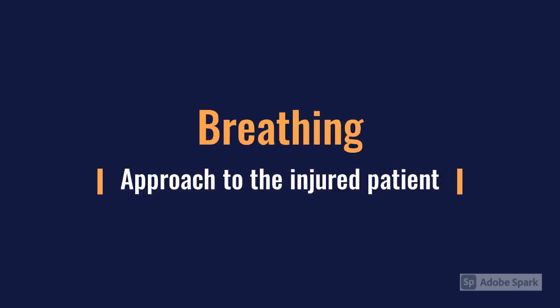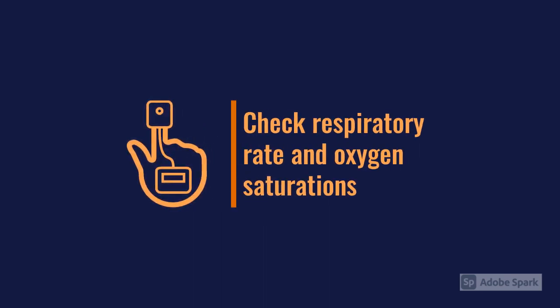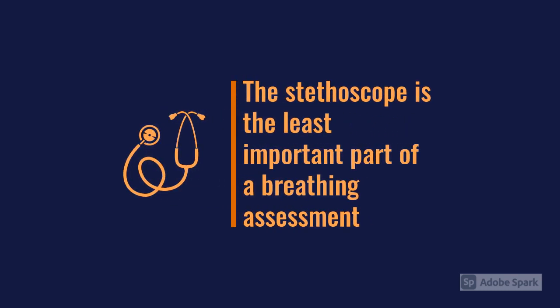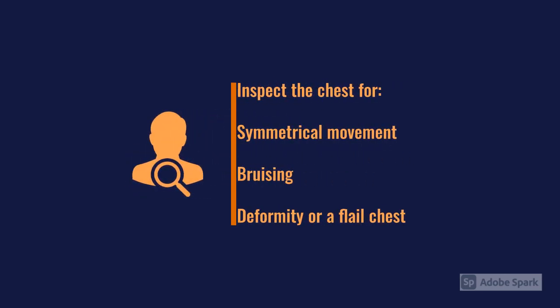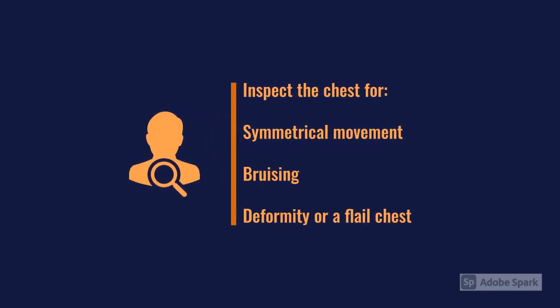Moving on to Breathing — you're going to check respiratory rate and sats, but the key for breathing in a trauma call is actually to largely ignore the stethoscope initially. The stethoscope is in many ways the least important part of a traumatic breathing assessment. The key is to look at the chest, make sure you've got symmetrical movement, and look for any evidence of bruising or a flail chest, where part of the ribs don't move in the same way as the rest.